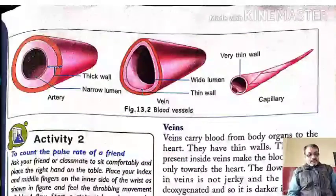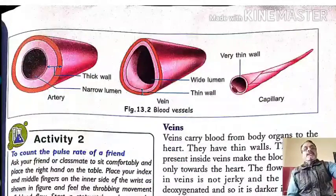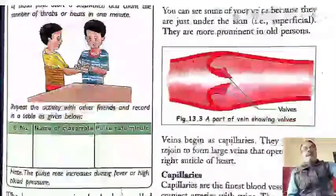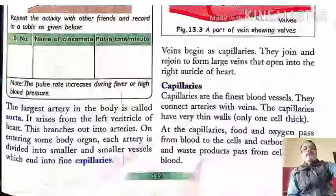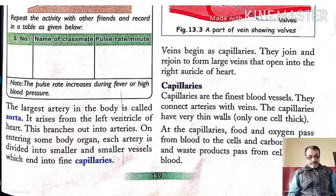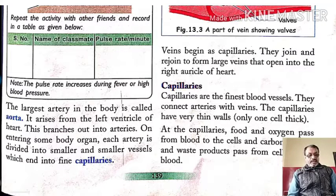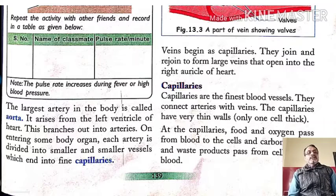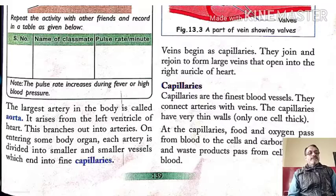The largest artery in our body is called the aorta. It arises from the left ventricle of the heart. As you can see, there are four chambers: two ventricles and two auricles.